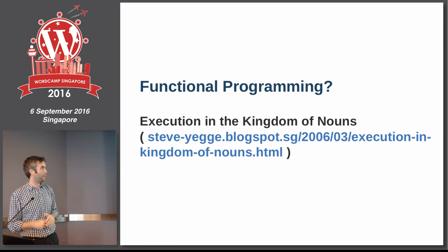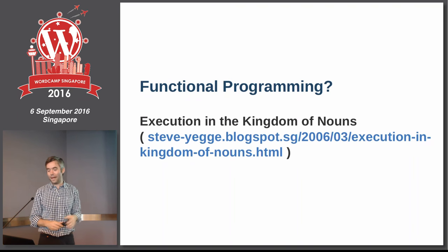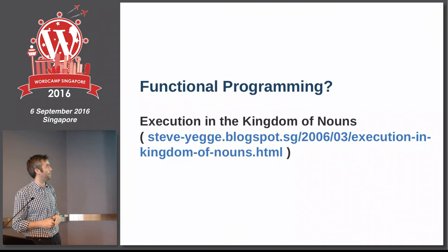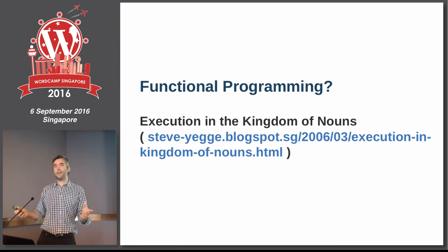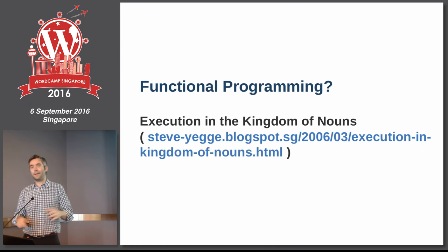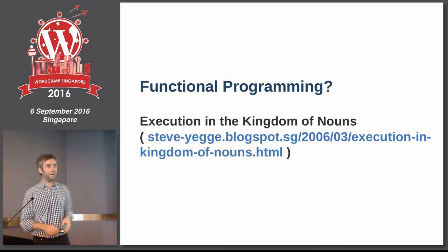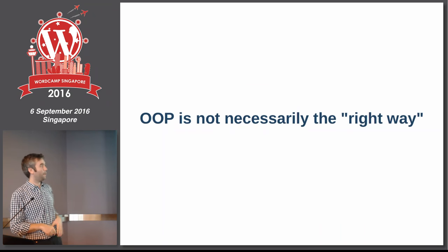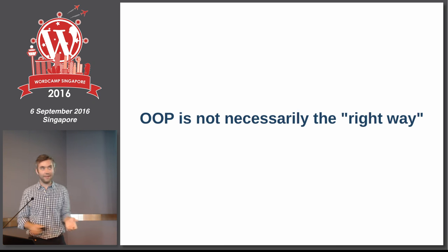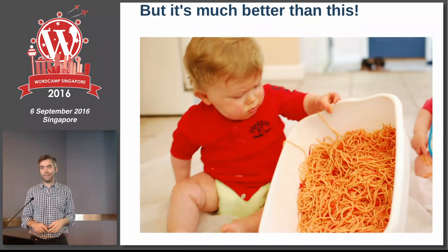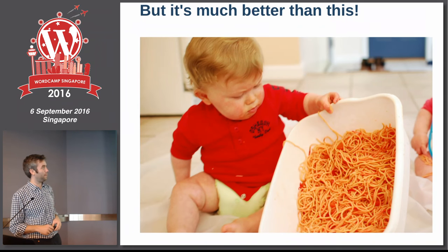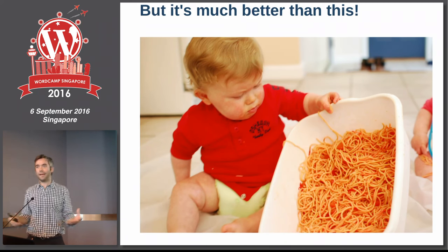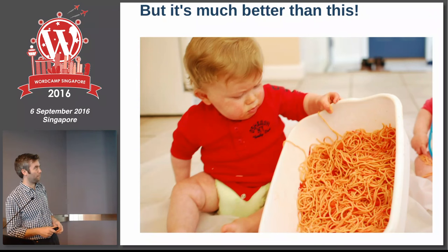It's a blog post — 'Execution in the Kingdom of Nouns' — like a story about a world where everything is only object-oriented. It's very anti-Java and quite funny. The joke is that OOP is like trouser-oriented clothing — you shouldn't just focus on one thing. OOP is not necessarily the only right way, but it's much better than spaghetti code, which makes me sad when I see it submitted to WordPress.com VIP. At least OOP gives you some structure and order.